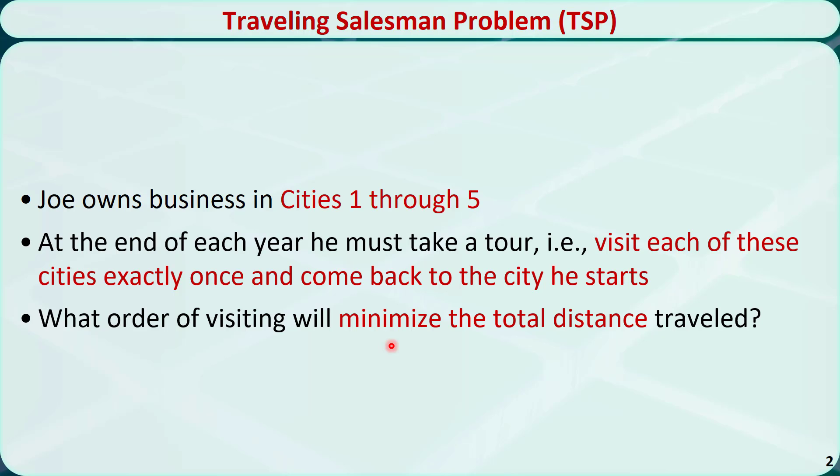The traveling salesman problem is a combinatorial optimization problem, and it has a finite number of feasible solutions.